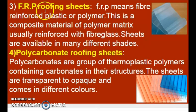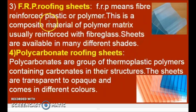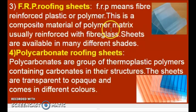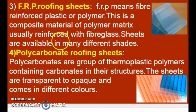Third one is FRP Roofing Sheets. FRP stands for Fiber Reinforced Plastic or Polymer. This is a composite material of polymer matrix, usually reinforced with fiberglass, which is used as the reinforcing material.